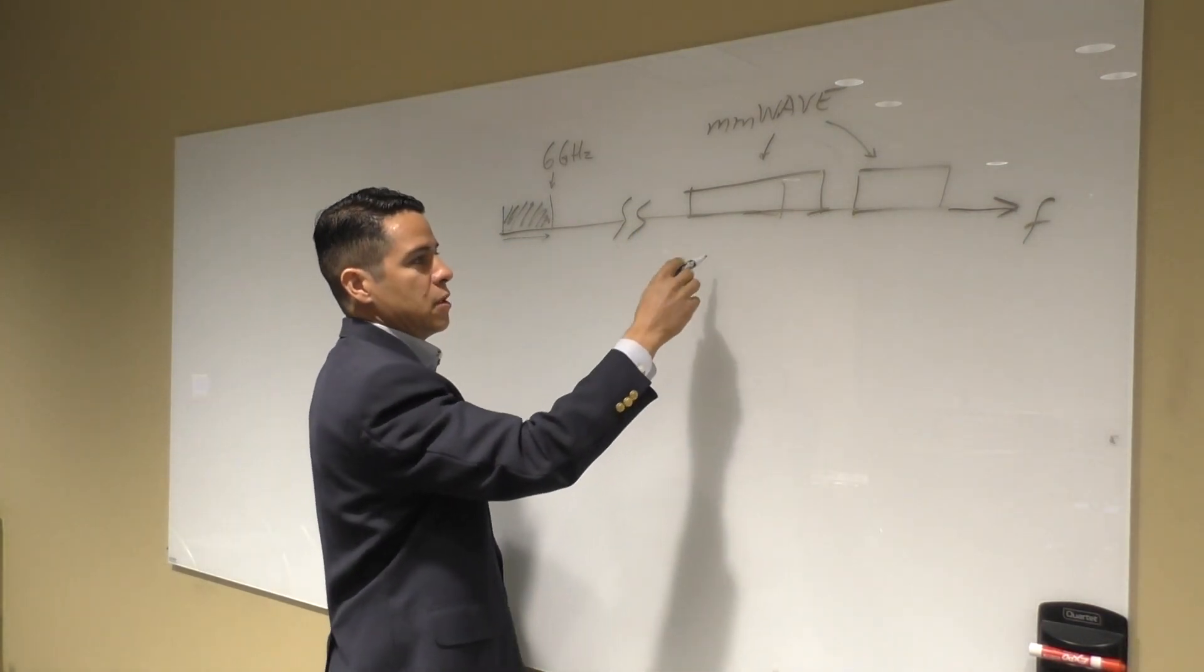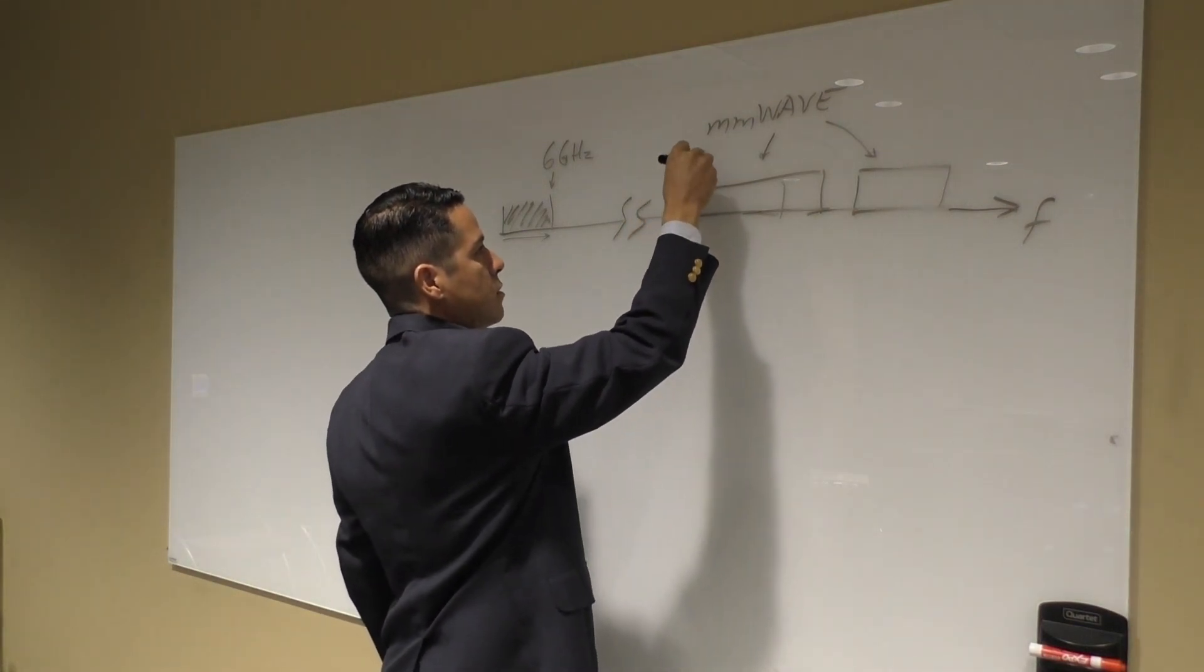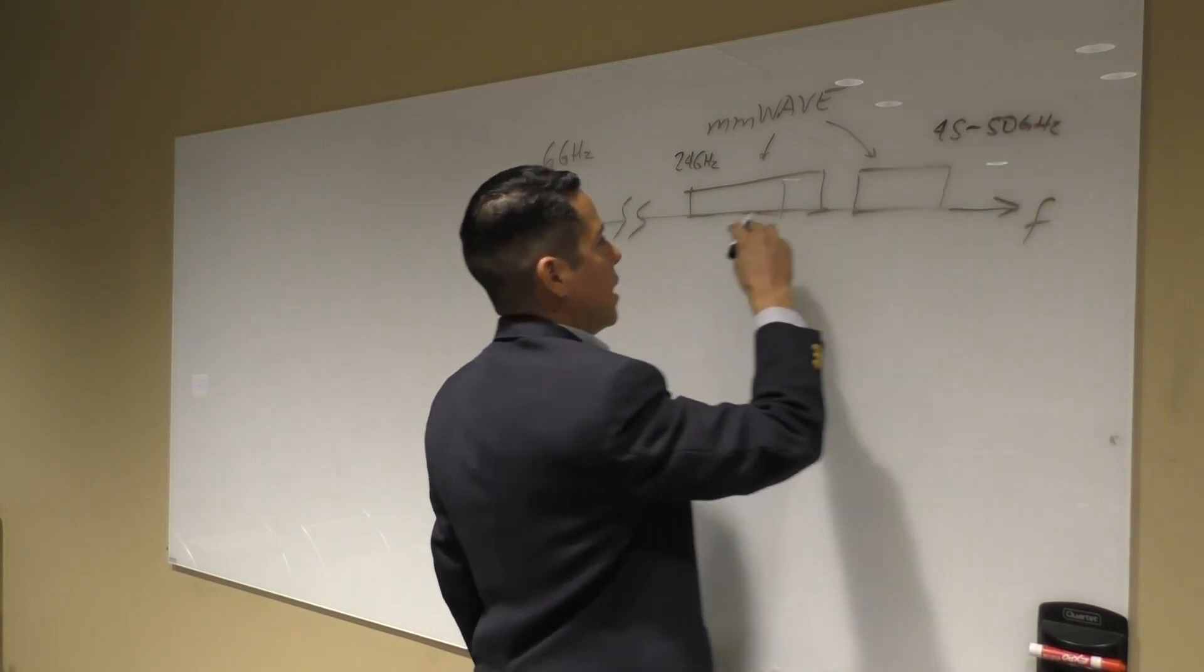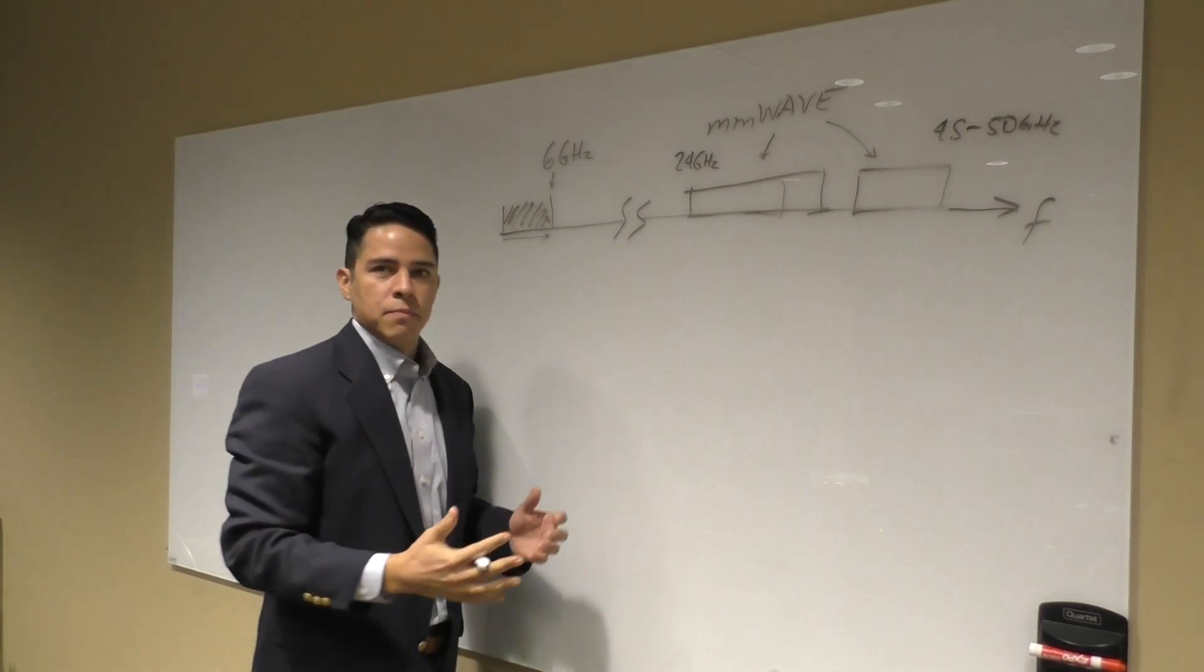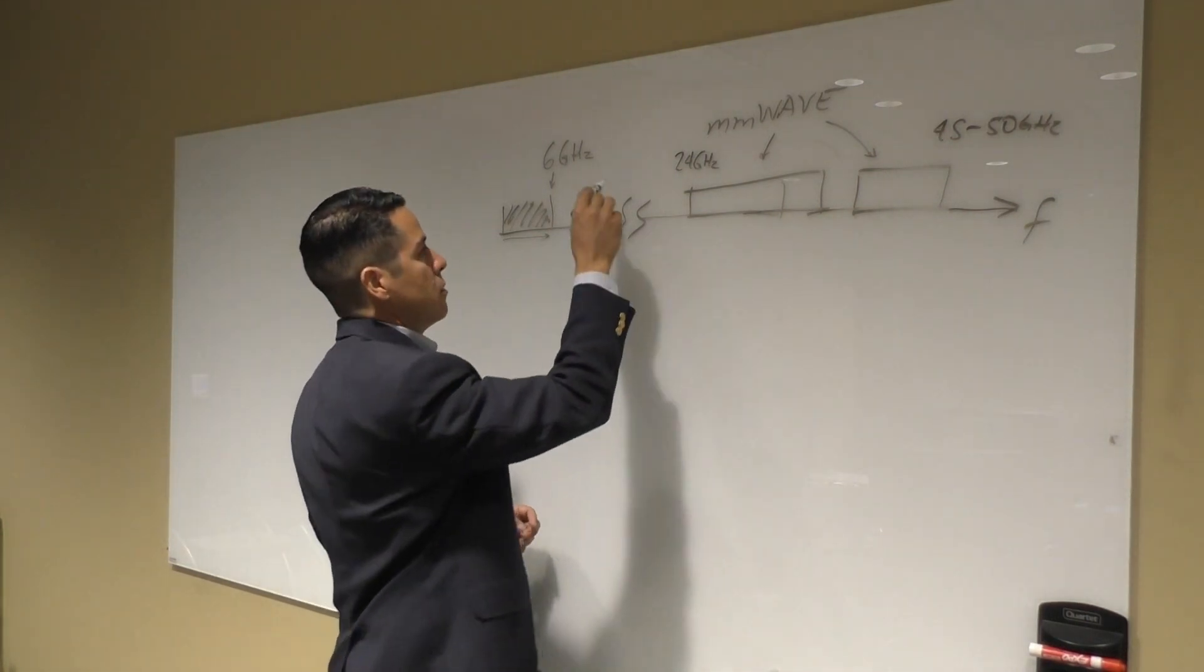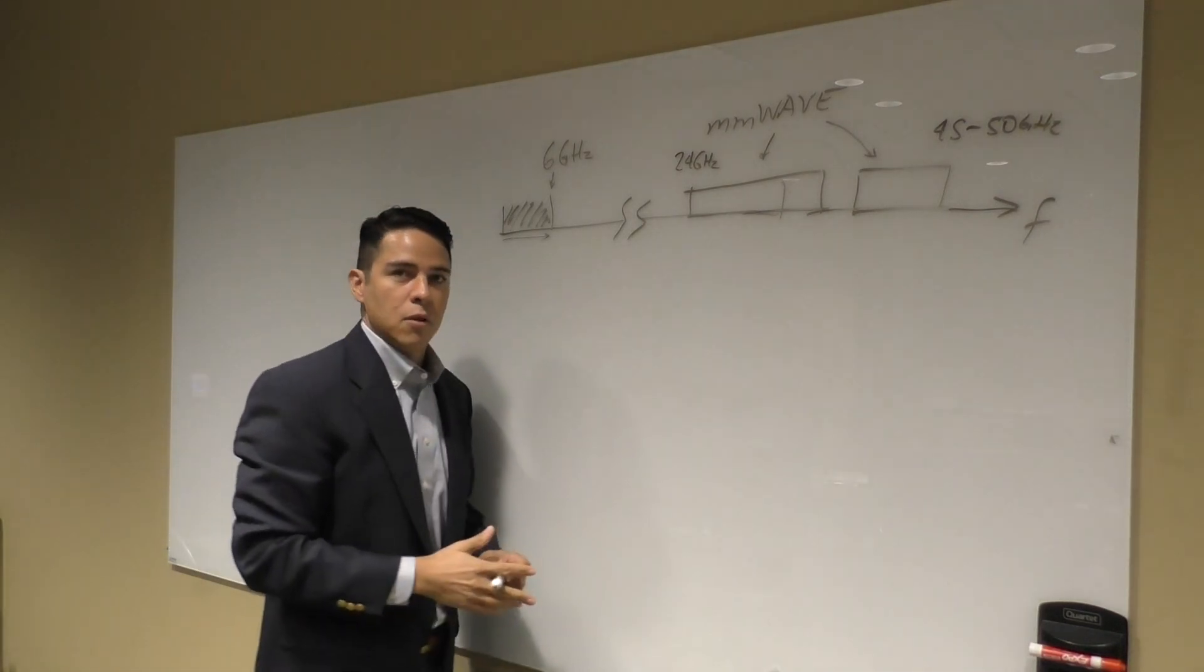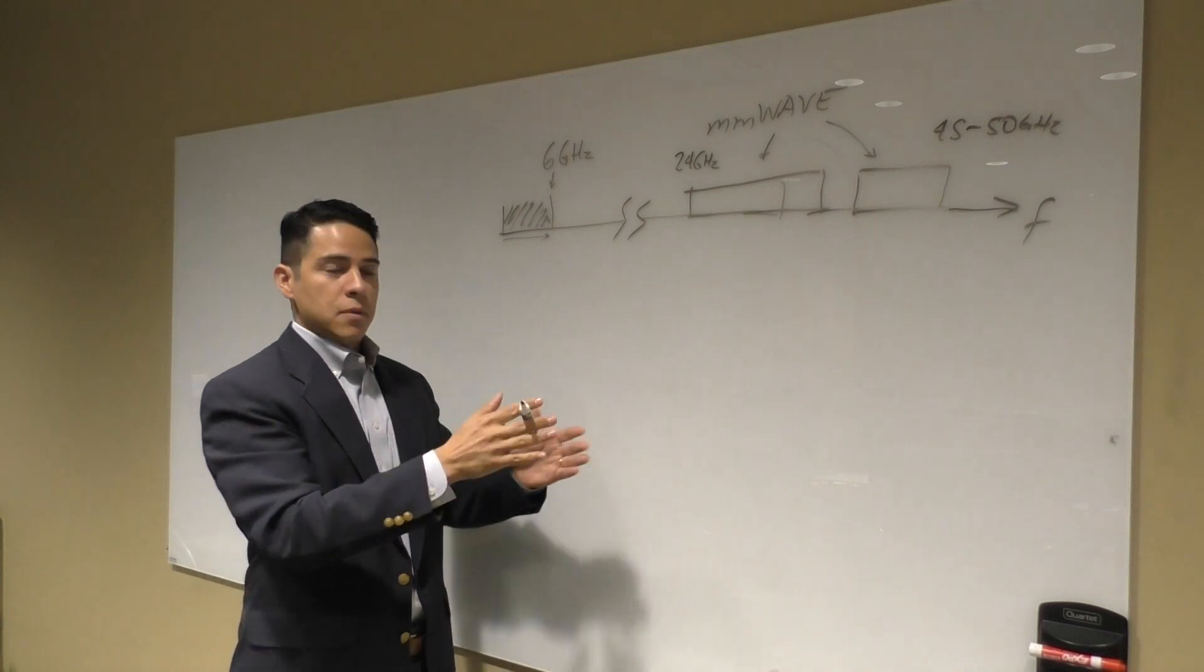But now, as we move into frequency range 2, or the millimeter wave range, from 24 GHz to about 45 or 50 GHz, we have to deal with a new set of challenges. We have wider channels here, different subcarrier spacing, different characteristics of how the signal is going to propagate. We have to work with these new types of devices and the architectures of the radios needed to overcome the propagation losses, like using beamforming to have more radiated power in specific directions.